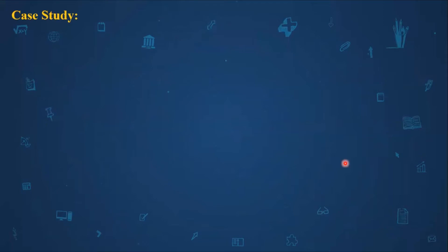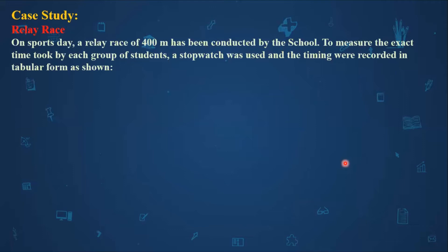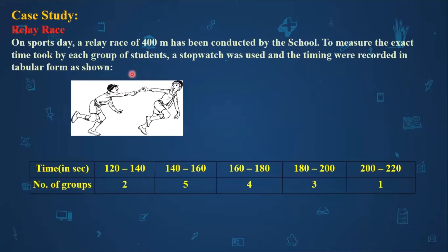This is the case study of a relay race. The paragraph says: on sports day, a relay race of 400 meters has been conducted by the school. To measure the exact time taken by each group of students, a stopwatch was used and the timings were recorded in tabular form. The first row is for time in seconds and the second row is number of groups. Based on this case study there will be five MCQs, but you have to attempt only four, so each case study is for four marks.